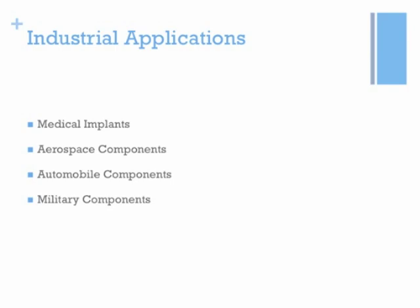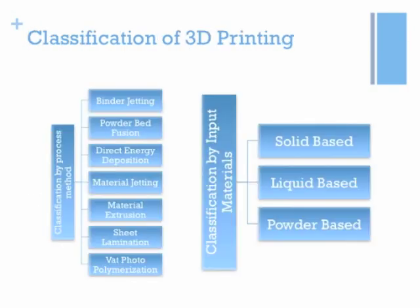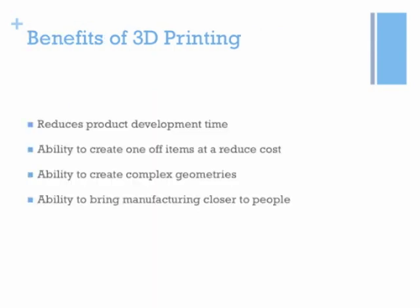There are different ways of classifying 3D printing methods. One way is by their process methods — such as whether they use binder jetting or powder bed fusion, and so on. However, to keep it simple, classification by input material is a good choice. It classifies 3D printing methods based on whether the input material is solid, liquid, or powder.